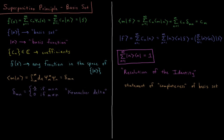The Kronecker delta, delta_mn, equals 1 if m equals n — meaning the functions are normalized, so the integral of psi star_n times psi_n equals 1. If m is not equal to n, the result is 0, meaning the functions are orthogonal to one another. So 1 if m equals n (normalized), and 0 if m is not equal to n (orthogonal). This Kronecker delta function is a statement that our basis set is orthonormal: both orthogonal and normalized.